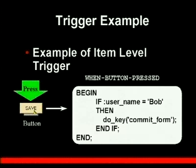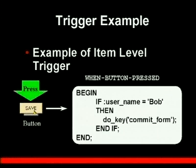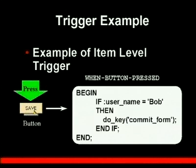Here's an example: you have a button, like the save button you see here. That button will have a 'when button pressed' trigger associated to it. This is a very basic PL/SQL block where, if the user is Bob, then commit the form — meaning this save button is only going to work if your username is Bob. It's important to realize that these PL/SQL triggers are slightly different than the ones you've become accustomed to from running against the database, and we'll get more into that in a future chapter on triggers.